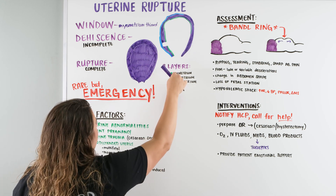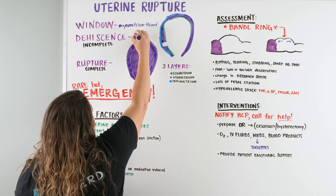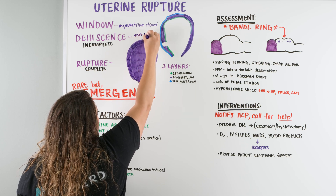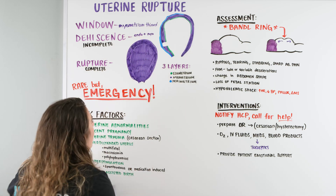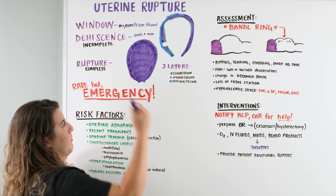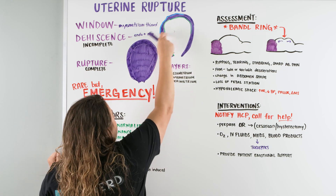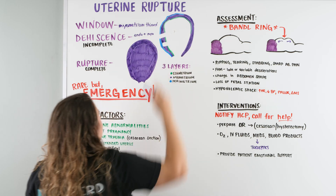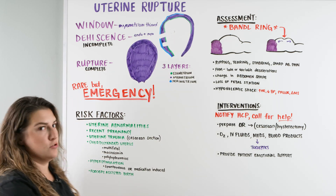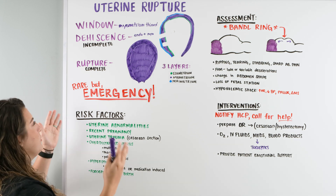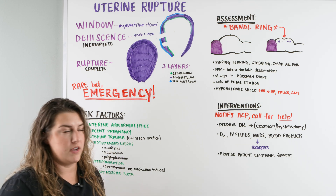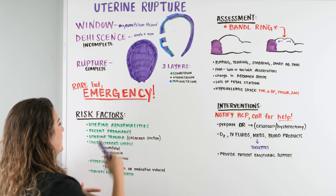With dehiscence, the tear goes through the endometrium and myometrium but not through the perimetrium. Then we have rupture — this goes through completely, through all three layers, creating an opening right to the baby. This is an emergency. It's rare, but it's an emergency, and there are lots of different risk factors that can cause this.